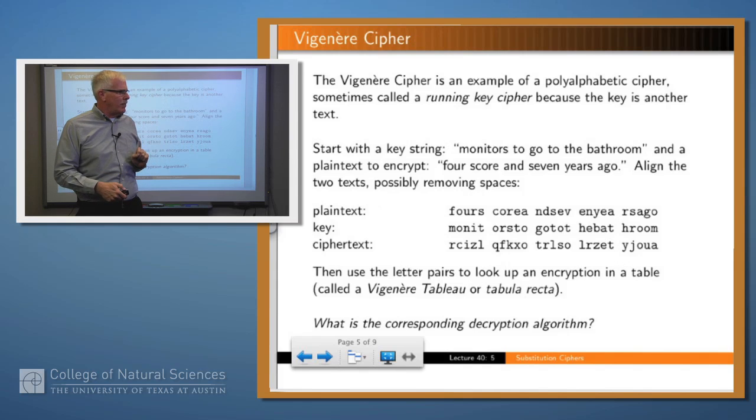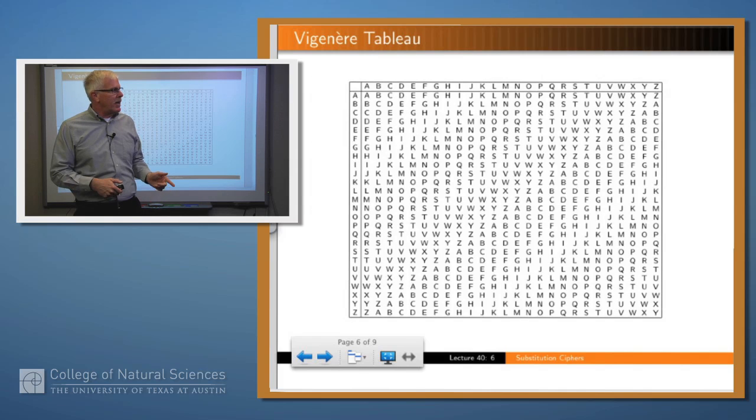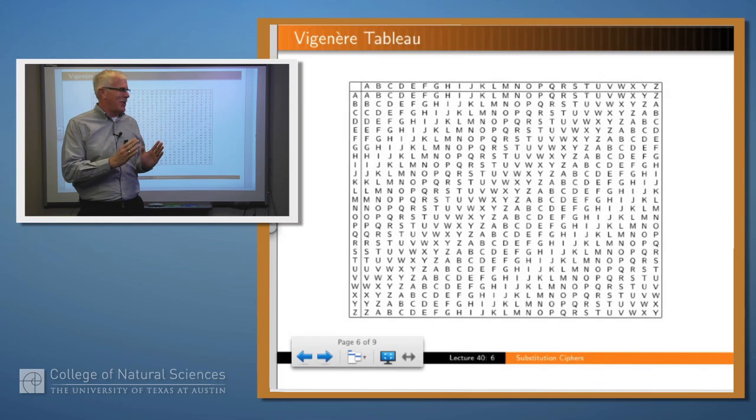So in this example, in the first case, we had an F from the plain text and an M from the key. And so where did that R come from? Well, we look at column M, row F, and we see that what's at that position is an R. And it really doesn't matter if you use the column or the row because you're going to get the same answer either way because the table is symmetric. And so if you continue in that way, you get a pretty strong cipher.